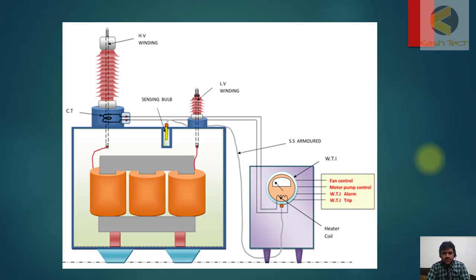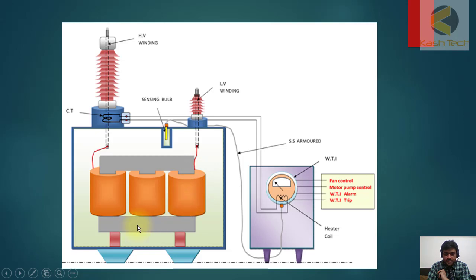Here is an example showing the HV bushing connected to the HV winding, and the LV bushing. You can see the sensing bulb, which is connected to fan control, motor pump control, temperature alarm, and tripping alarm. This entire setup is for the winding temperature indicator.